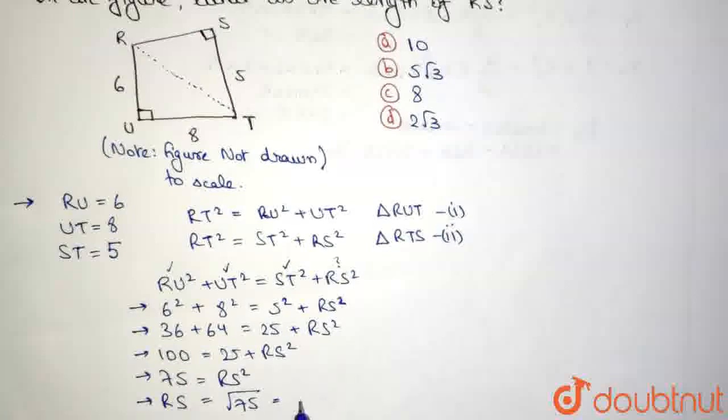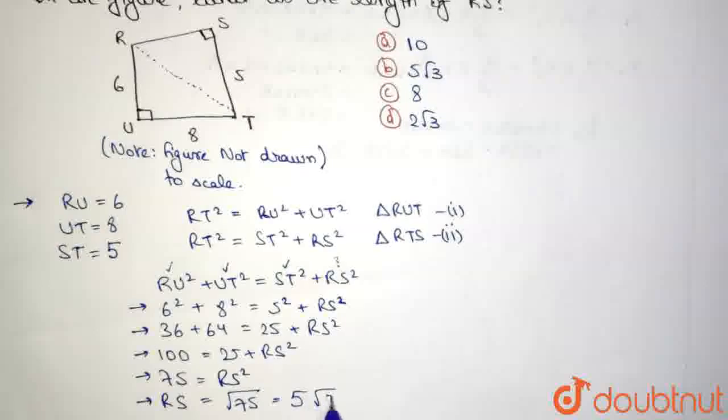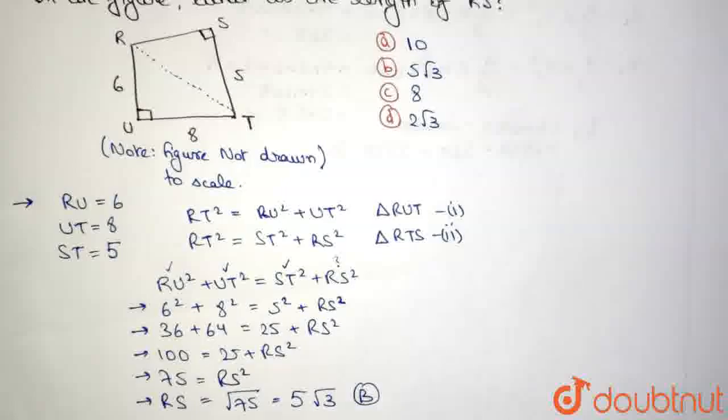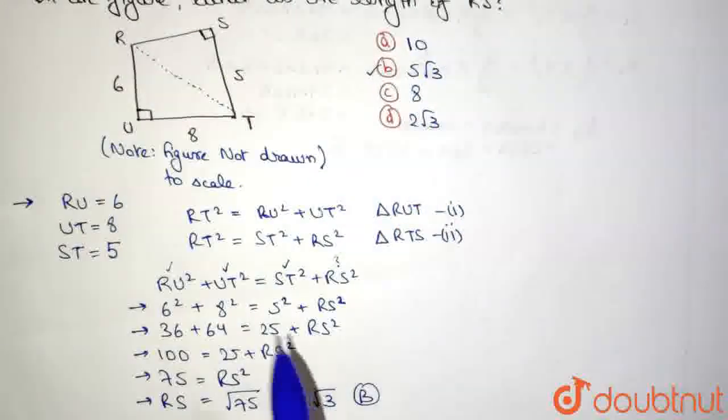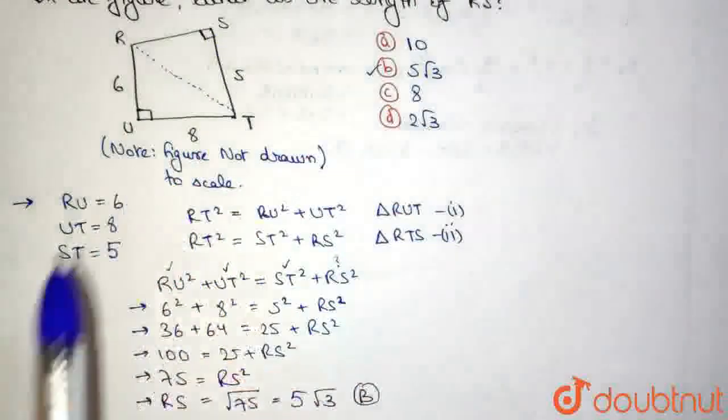Or I can say RS is equal to square root of 75. So this is equal to 5 root 3, because square of 5 root 3 is 75. And upon comparing with the options, we see that this matches with option B. So the correct answer to this particular question is option B, which is 5 root 3, or 5 root 3 is the value of this side RS in this particular given figure.